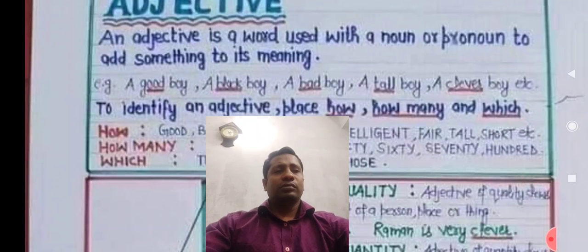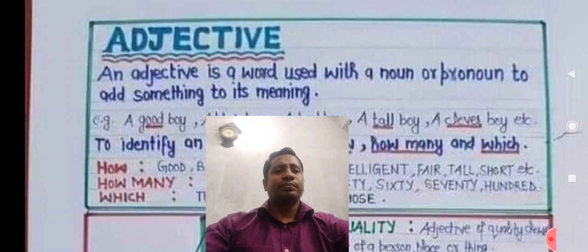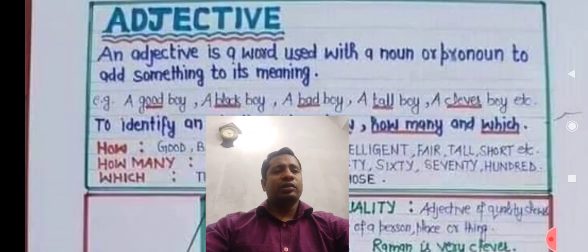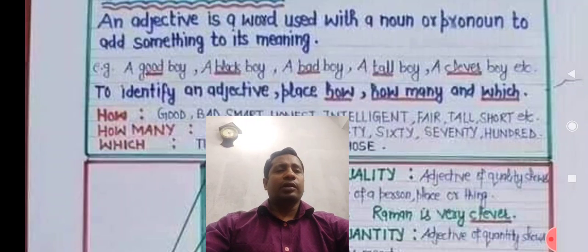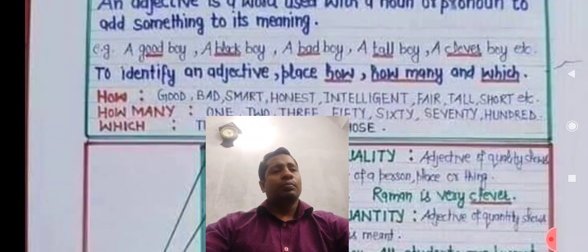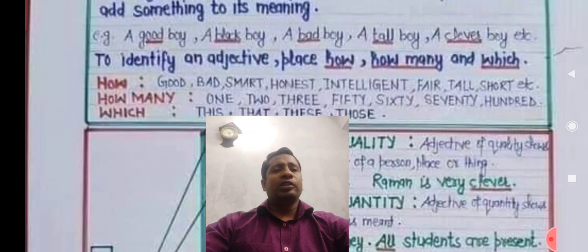At first, I give the definition of adjective. An adjective is a word used with a noun or pronoun to add something to its meaning. To identify an adjective: place, how and how many — and some examples of adjectives.